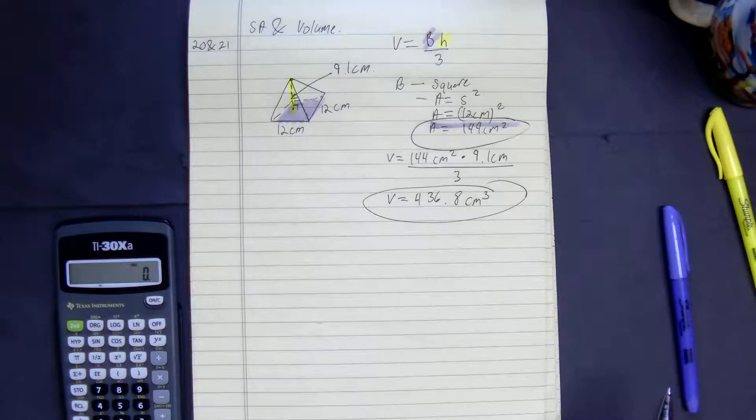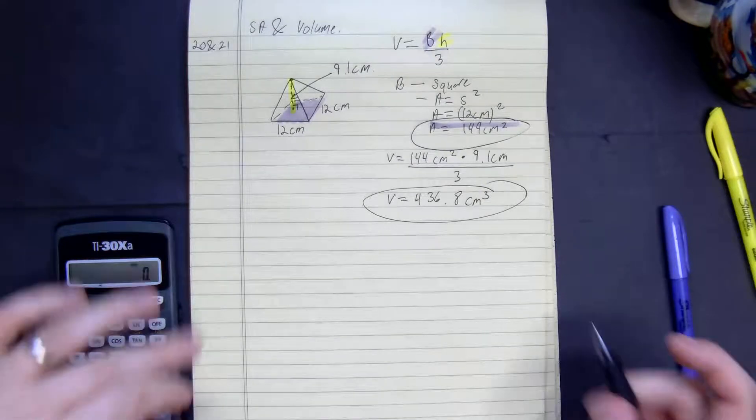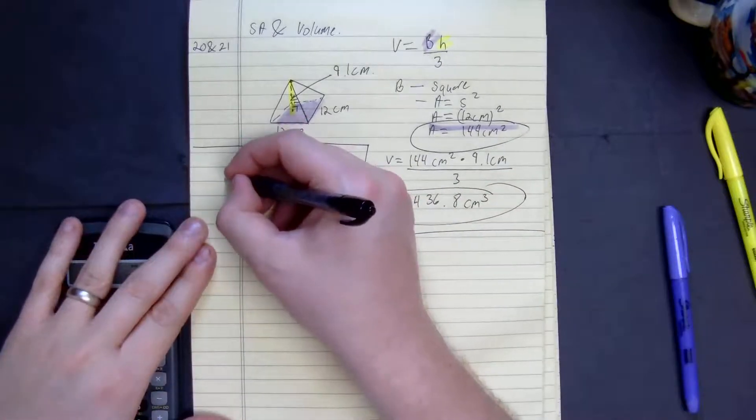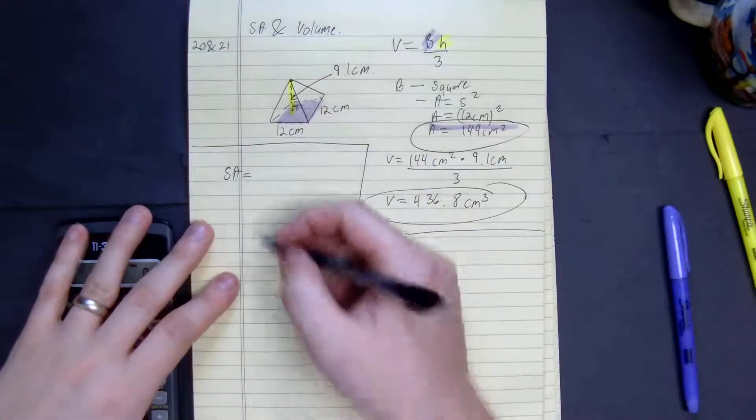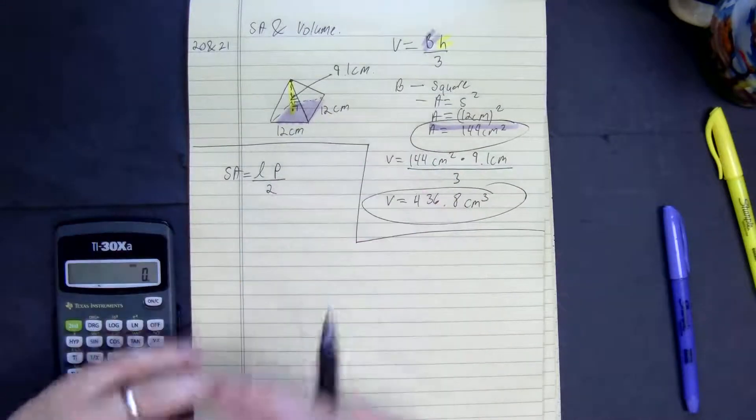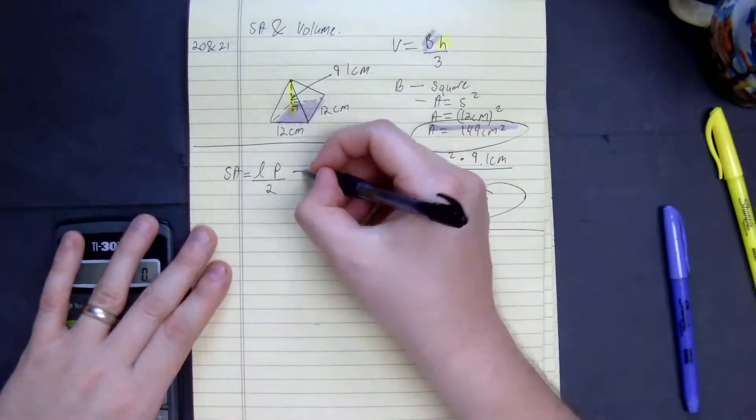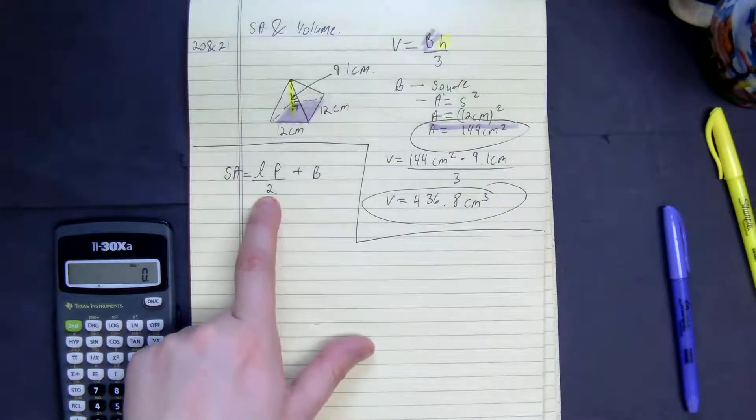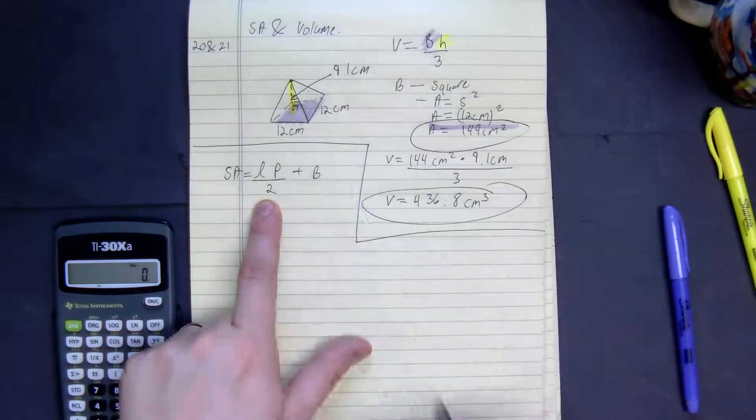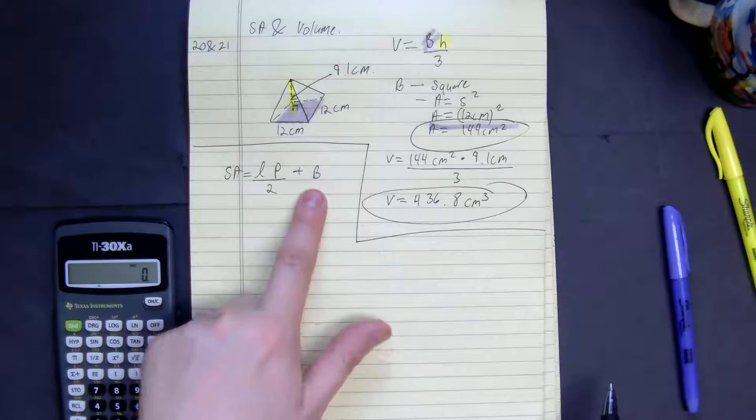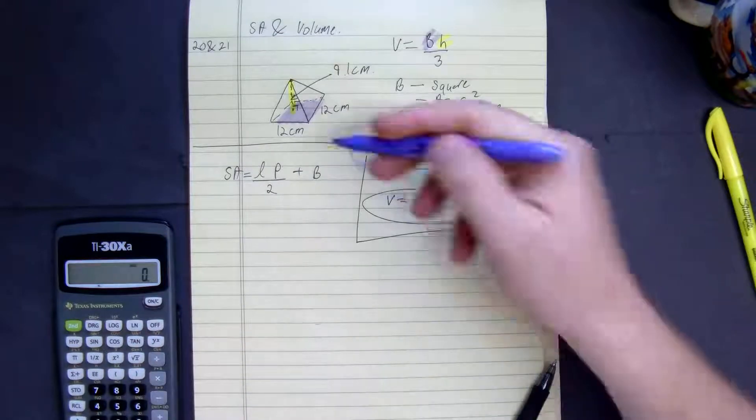So the surface area for this pyramid is a little different than the other one. Surface area is equal to the slant height times the perimeter divided by 2 plus the base. So the reason why we divide by 2 is because we're just finding the area of all four of those triangles, multiplying it by the perimeter. And the base would, of course, be a square.